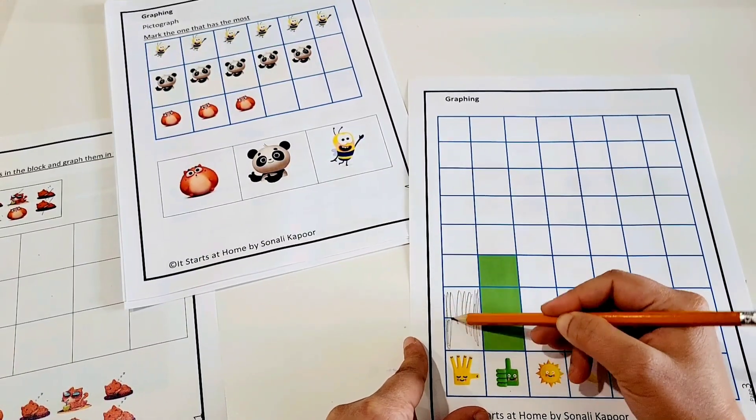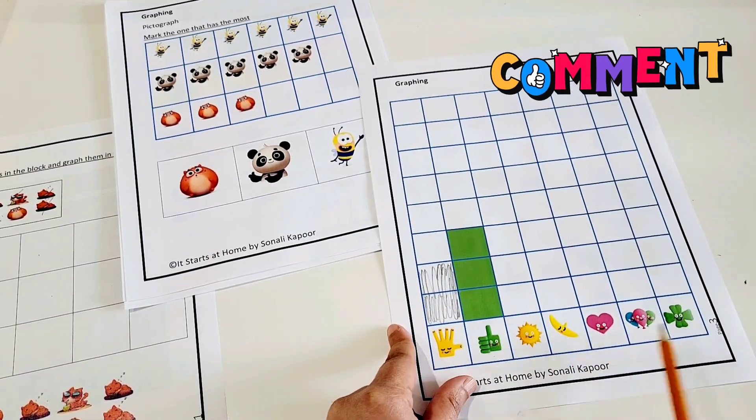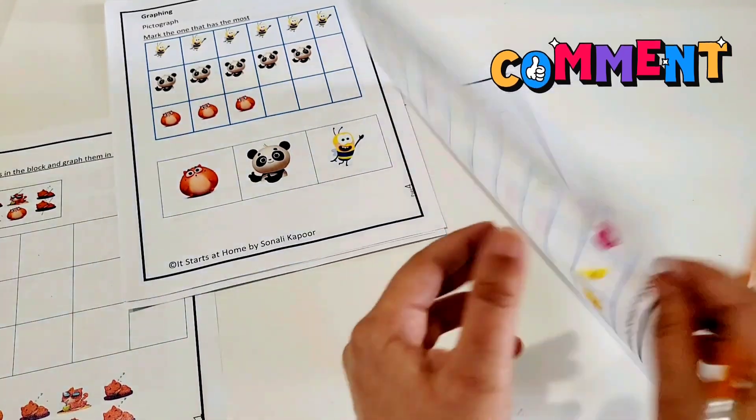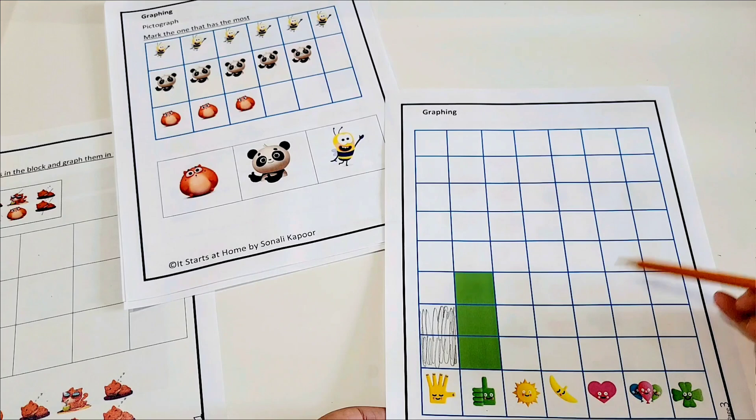So the child has to shade the bar up to 2. In the same way, each picture denotes a number here and the child has to then graph by shading the number of steps.